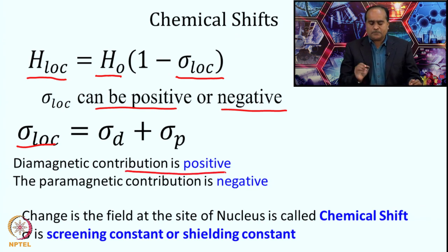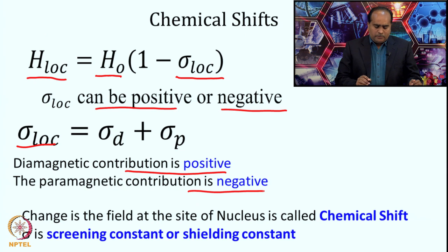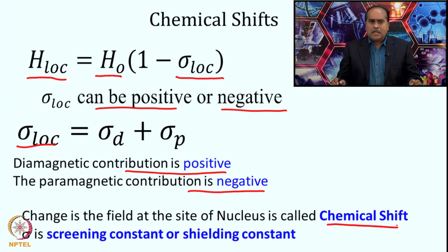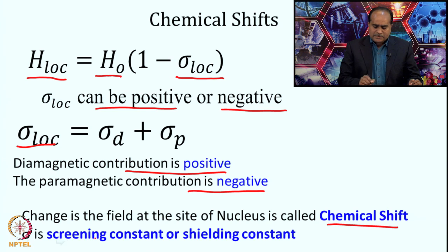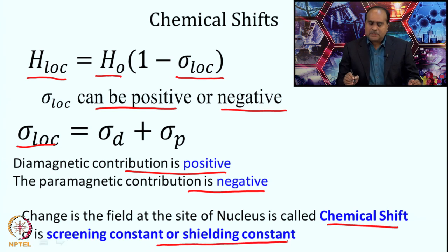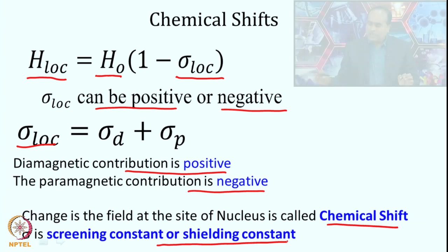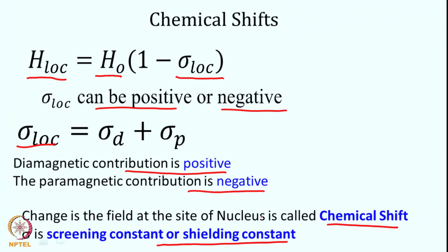Generally, the diamagnetic contribution is positive and the paramagnetic contribution is negative. The change in field at the site of the nucleus is called chemical shift, and sigma — called the screening or shielding constant — is the reason why the same kind of nuclei can experience different magnetic fields, giving different absorption lines.